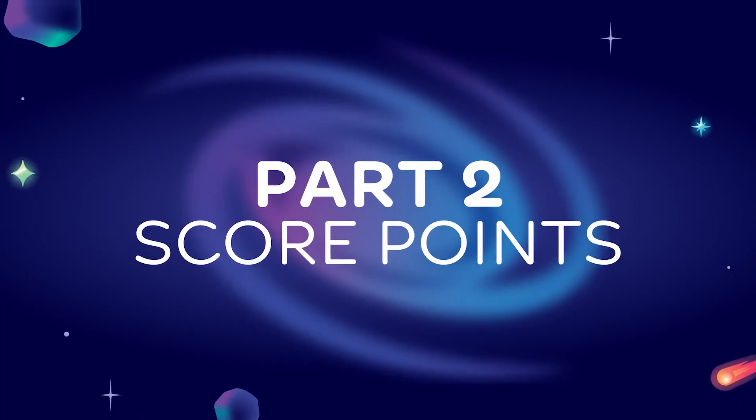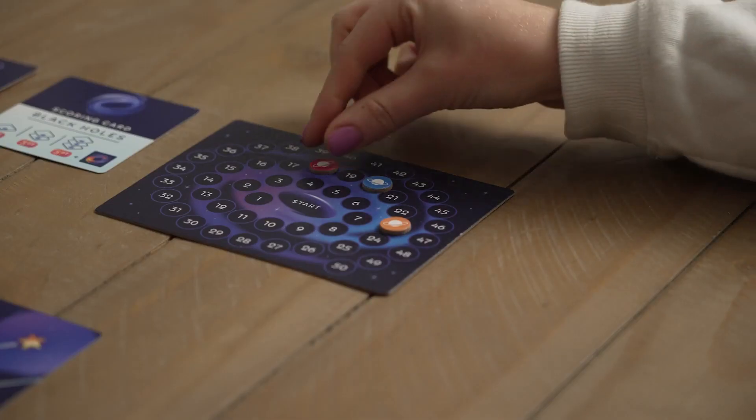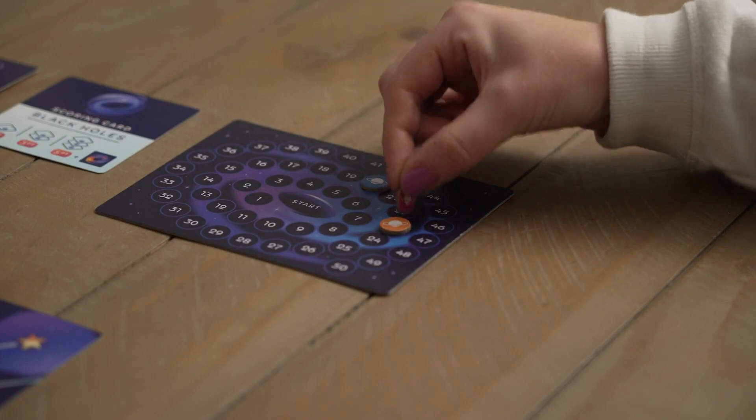Part 2. Score Points. You score points based on the three scoring cards. Move your token along the scoring track to record your points.